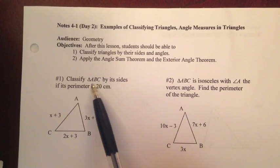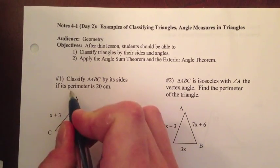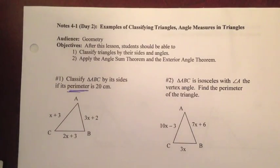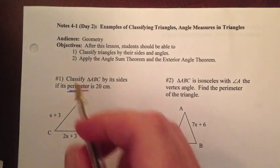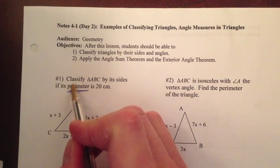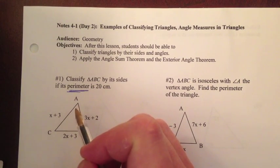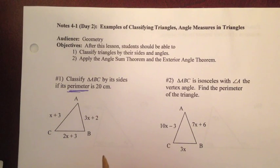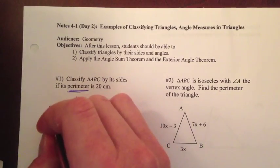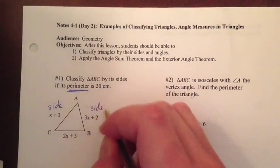Example number one, classify triangle ABC by its sides if its perimeter is 20 centimeters. So the key word here is perimeter, so that's telling us what we need to do. And also the word classify, that means to name, so we're going to give this thing a name. Now you might look at this and say that looks like it's scalene or it looks like it's isosceles. That doesn't mean that it is. You cannot go by the looks, you have to go by the math. When you see this x plus 3, that is a side length. It is not an angle. If it was an angle, we would label it inside the triangle. So basically, this is a side, this is a side, this is a side.